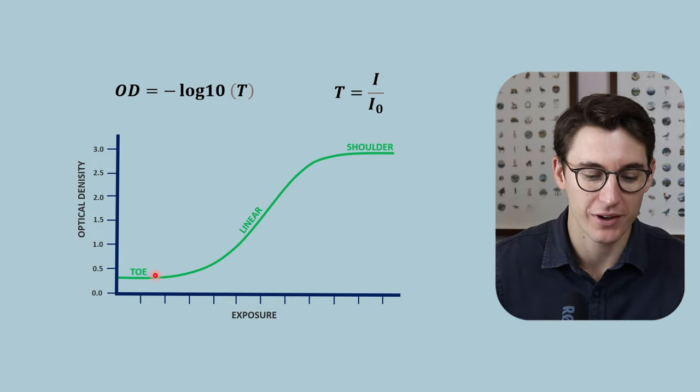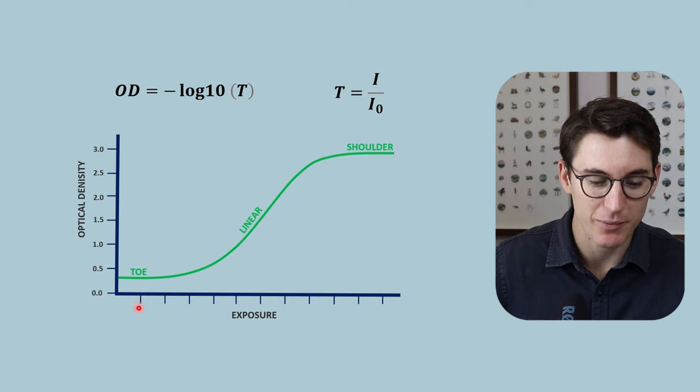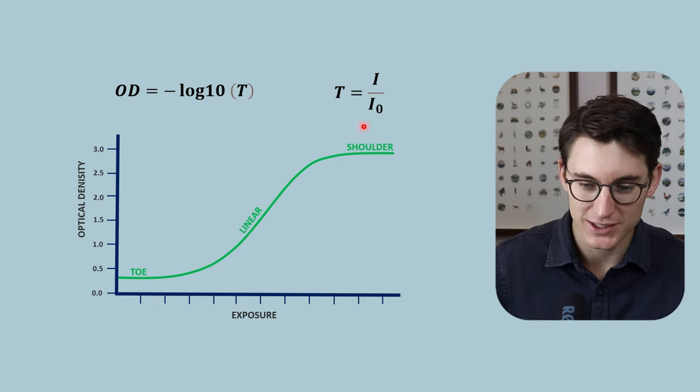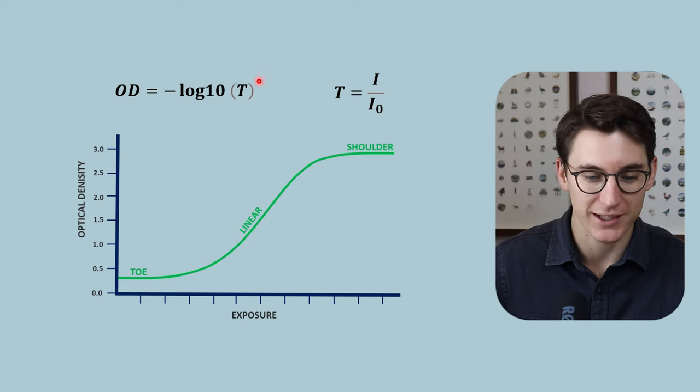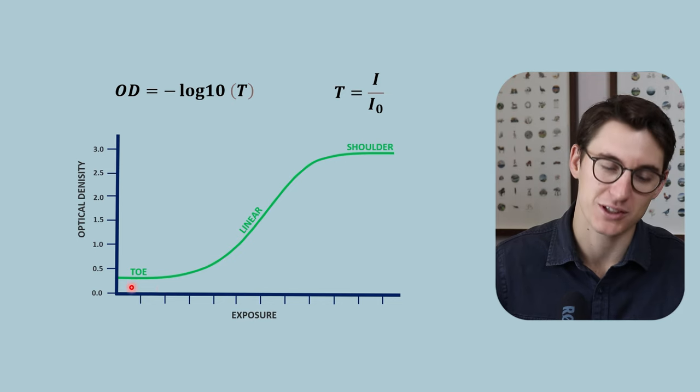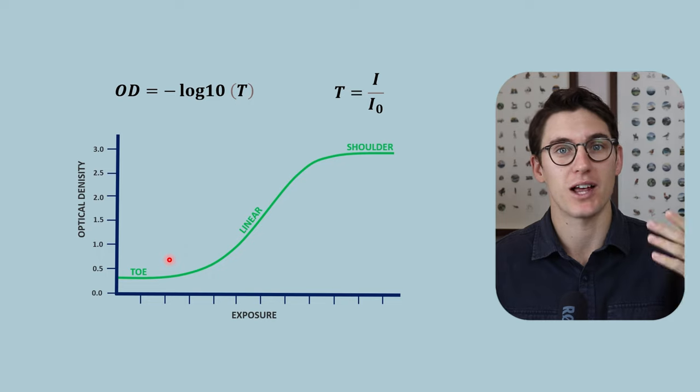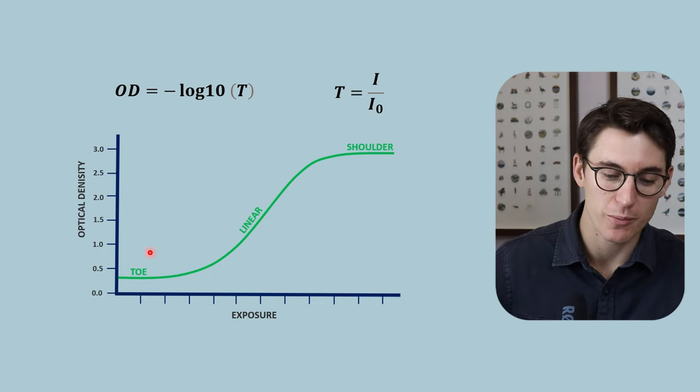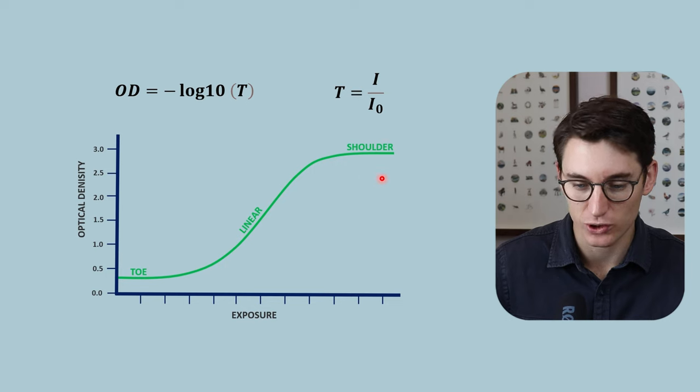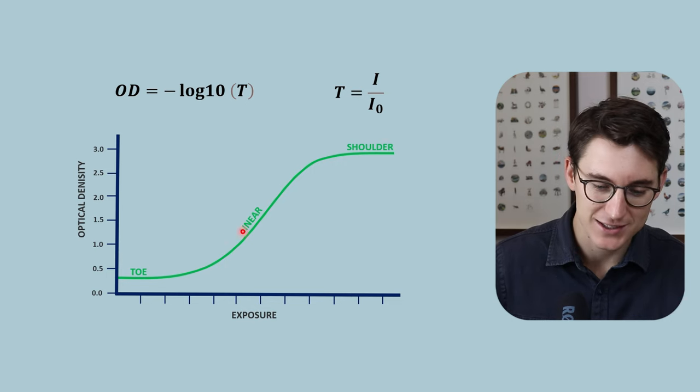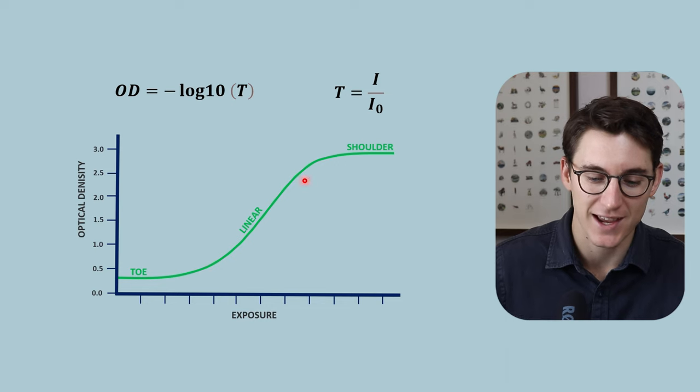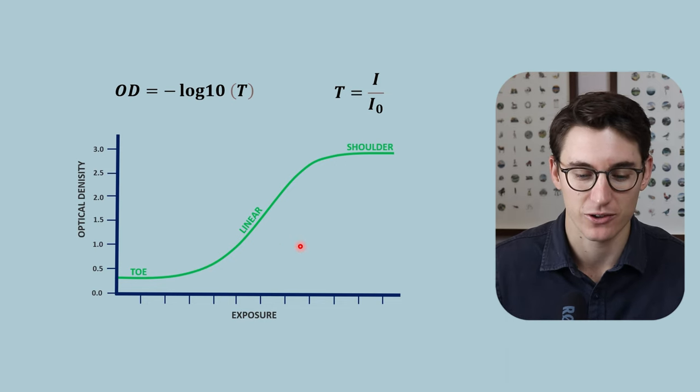The opposite is true for the toe of our image. Here we are not getting many x-rays reaching our screen film itself. Our transmittance value is high. Once we plug it into this formula we get a low optical density value. A lot of light is making it through. And this region in between our toe, the bright regions of our image, and the shoulder, our dark regions of the image, is our linear region here and this is what provides contrast and anatomical detail within our image.